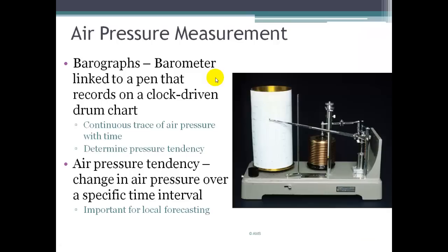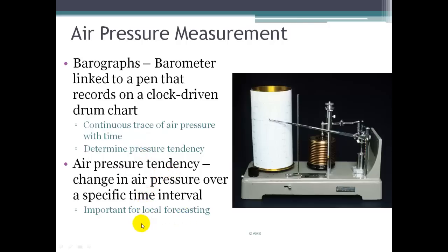We can also measure air pressure with a barograph, which is a barometer linked to a pen and a roll of paper, so that what we end up with is a continuous record of air pressure. Instead of just getting a single reading, we have a record of what the pressure has done over a period of time. That way we can get what's called the pressure tendency — the change of pressure over time — so we can see whether pressure is increasing or decreasing and better forecast the weather.